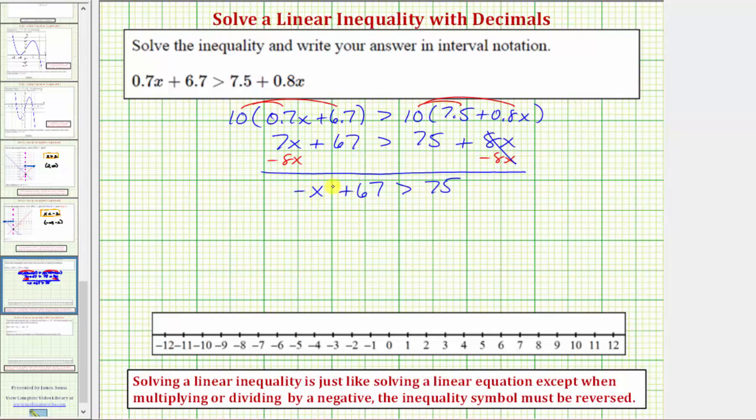Now let's isolate the variable term by subtracting 67 on both sides. Simplifying, this would be zero. So we have negative x greater than 75 minus 67 is equal to eight.